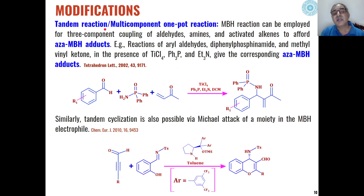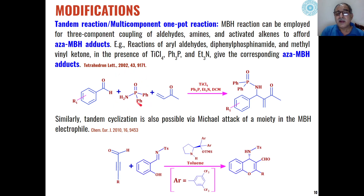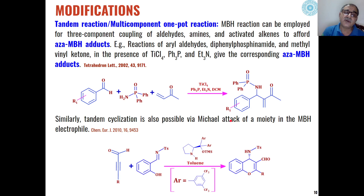A third type of modification is tandem reaction or multi-component one-pot reactions. Multi-component reactions give different types of biologically active products. For example, when aryl aldehydes react with diphenylphosphine amide in the presence of methyl phenyl ketone using TiCl4 (titanium tetrachloride) as catalyst with triphenylphosphine and triethylamine in dichloromethane as solvent, alpha-amination of the alkene takes place and we get aza-MBH adducts — that is, with nitrogen instead of oxygen.